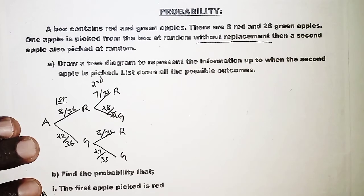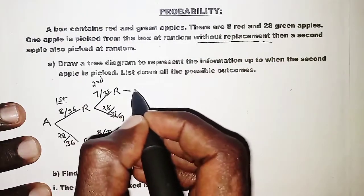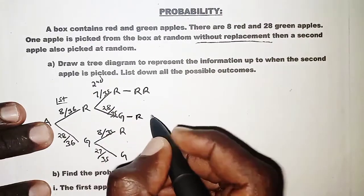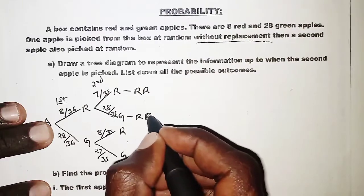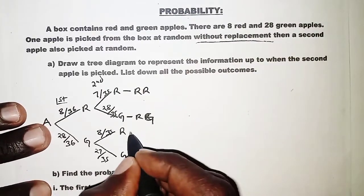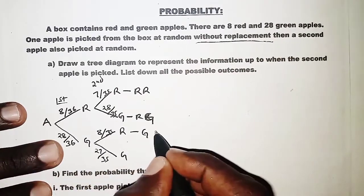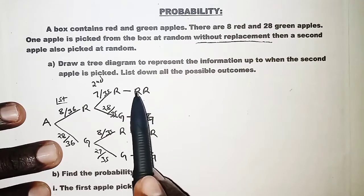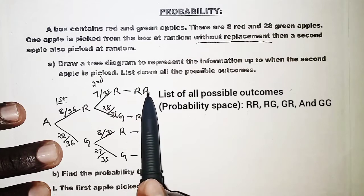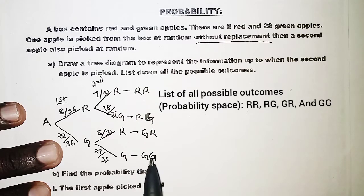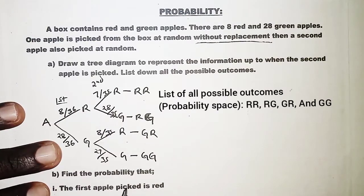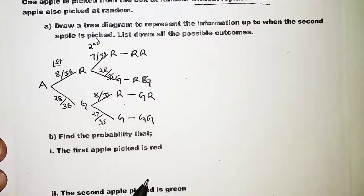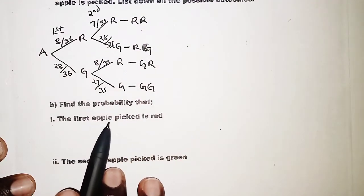We can now form the sample space — the list of all possible outcomes. In the first picking you can have: red followed by red (RR), red followed by green (RG), green followed by red (GR), and green followed by green (GG), where R and G represent red and green apples respectively. With this tree diagram we can answer the following parts.